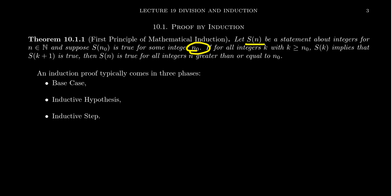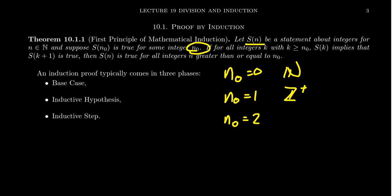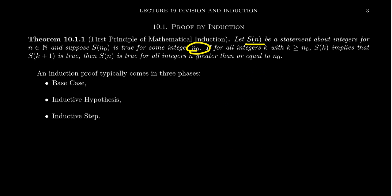Often n₀ will be zero itself, because the statement will be true for all natural numbers. Sometimes n₀ might be one because we're only considering positive integers — the statement might not make sense for zero if there's division involved. You could also see situations where n₀ is two, or even 17 — there will be situations where a pattern might not begin until the 17th number. So this first number is an integer; it doesn't matter which, but there's some initial value for which the statement is known to be true.